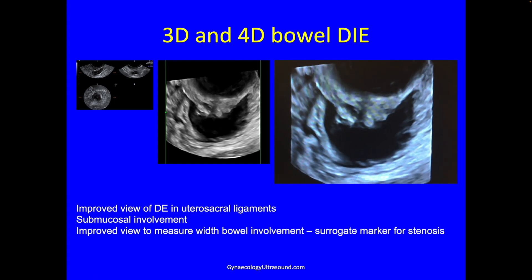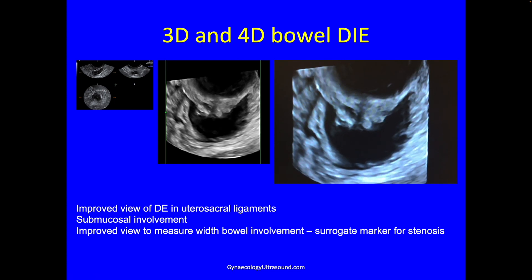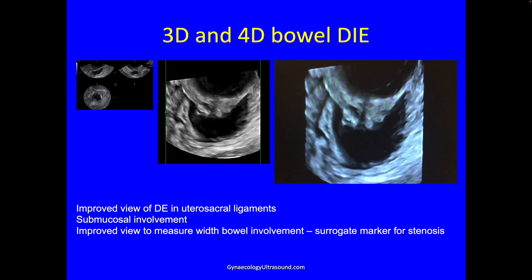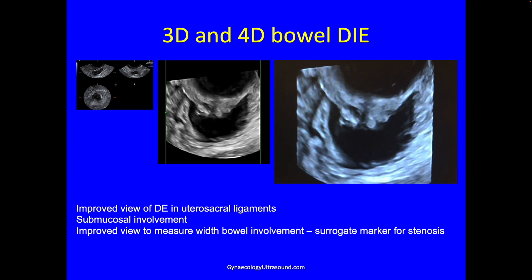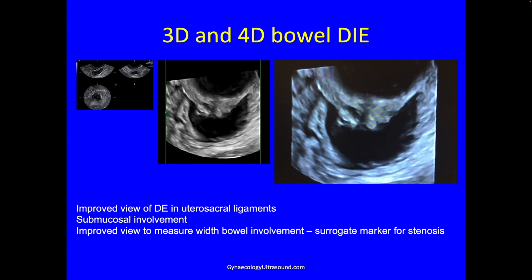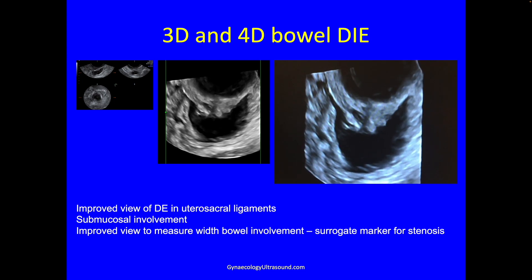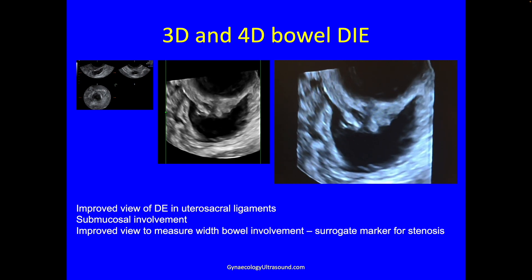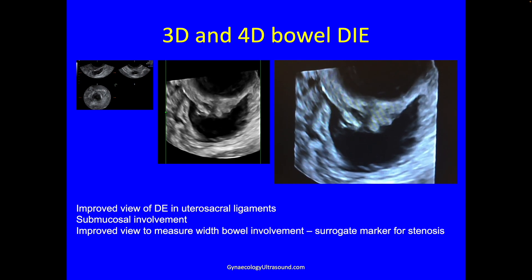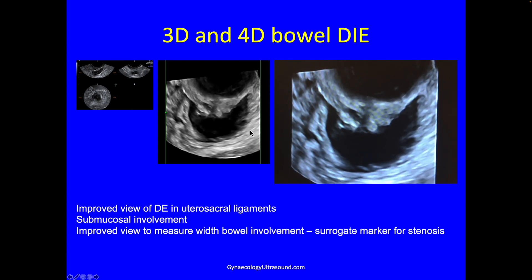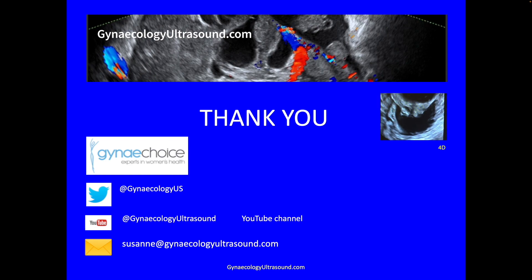The other thing you can do is 3D and 4D ultrasound. 3D can be really quite useful if the patient is very tender and you can't get a good measurement for length or width. You can also really judge submucosal involvement, which is a strong marker for stenosis. Thank you.